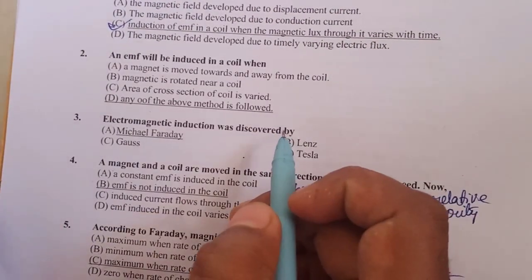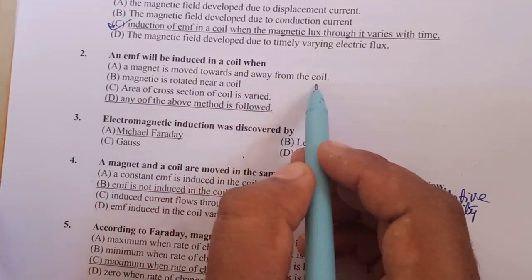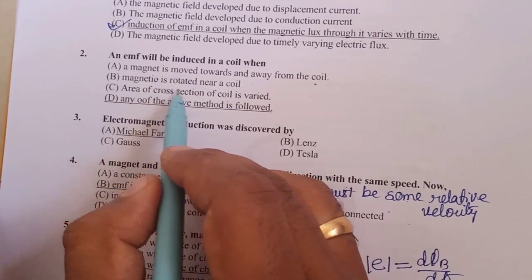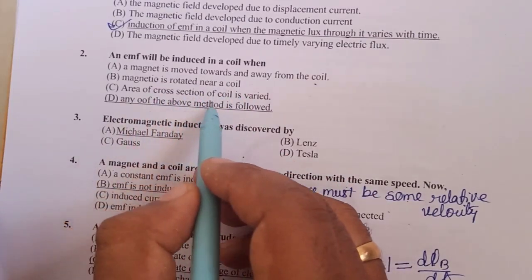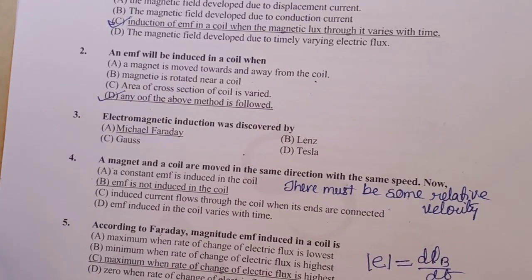An EMF will be induced in a coil when a magnet is moved towards or away from the coil, when the magnet is rotated near a coil, or when the area of cross section of the coil is varied. So all three are correct, therefore any of the above methods is followed.